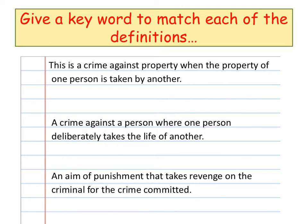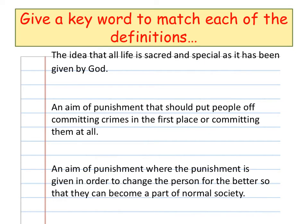Number thirteen: an aim of punishment that takes revenge on the criminal for the crime committed. Number fourteen: the idea that all life is sacred and special as it has been given by God. Number fifteen: an aim of punishment that should put people off committing crimes in the first place or committing them at all.